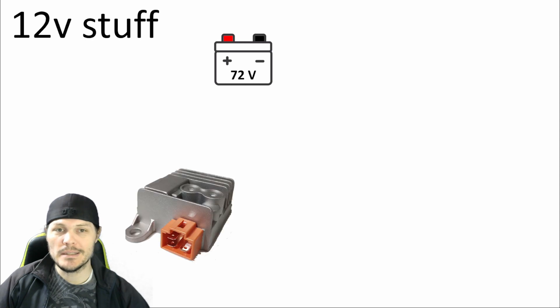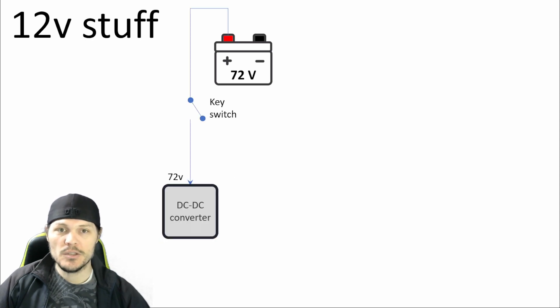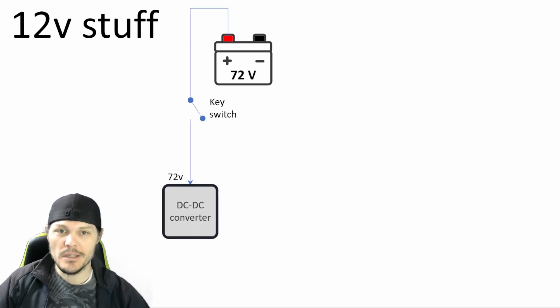So here we go, 12 volt stuff. Let's start drawing what we know. We know there's going to be a battery. And the battery is 72 volts, and that's too high. And so it needs to go to a DC-DC converter. The key switch is somewhere between the DC-DC converter and the battery. One of the outputs from the DC-DC converter is ground, and the other output is 12 volts. That 12 volt leg from the DC-DC converter goes to all of my accessories.